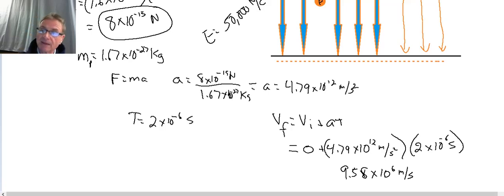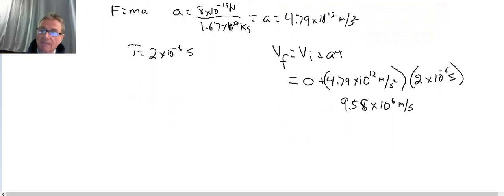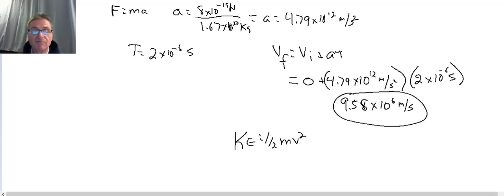And lastly, we'd like to know at that point in time, when our proton is moving at 9.58 times 10 to the 6th meters per second, what will be the kinetic energy of our proton? Well, kinetic energy, again, reaching back a little bit, is equal to 1 half M V squared. Well, we have M and we have V, so we can just plug these into our equation.